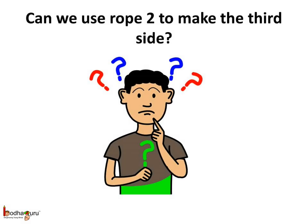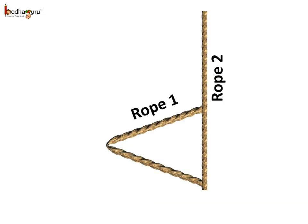Can we use rope 2 to make the third one? Let us put rope 2 to join the two open ends of rope 1 and see. Well, we cannot use rope 2 to join the two open ends of rope 1 as rope 2 is too long.